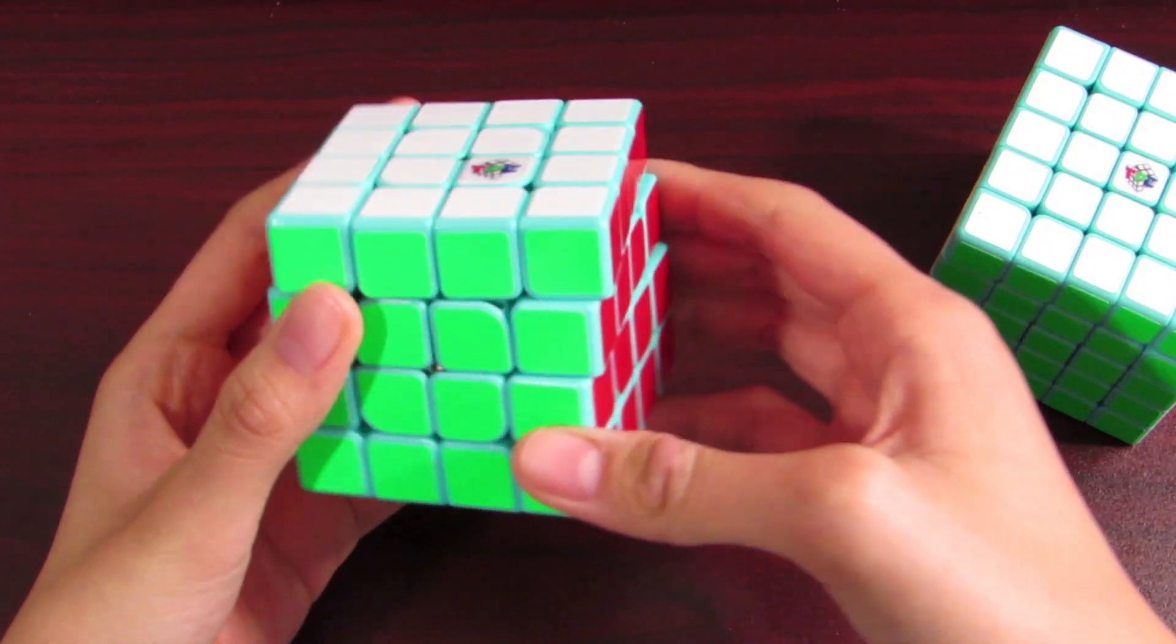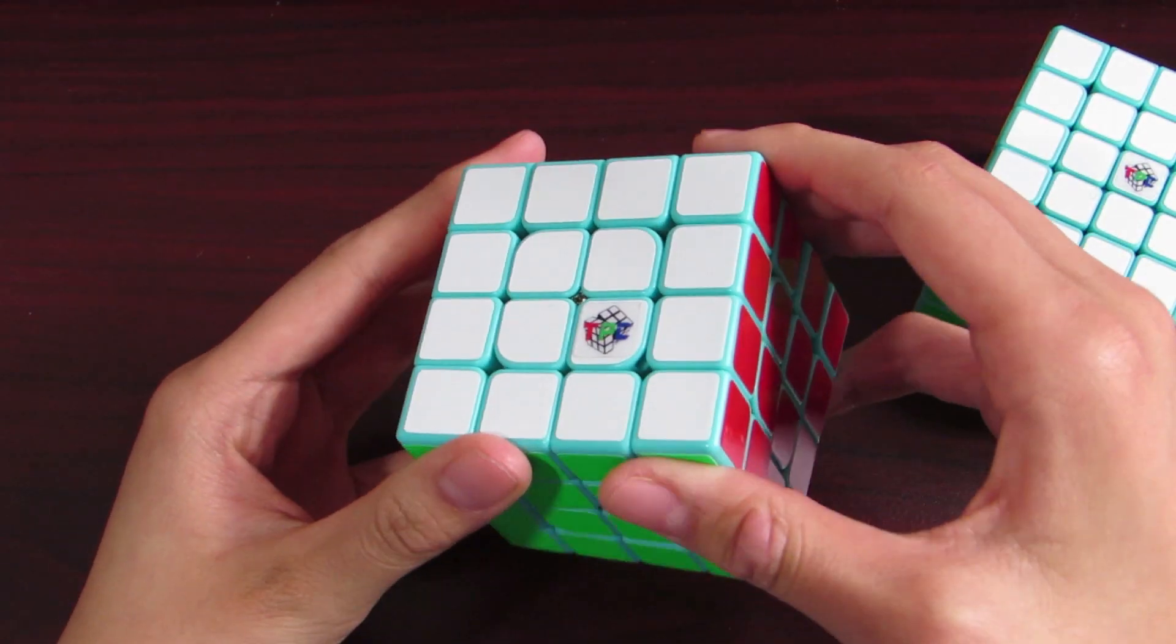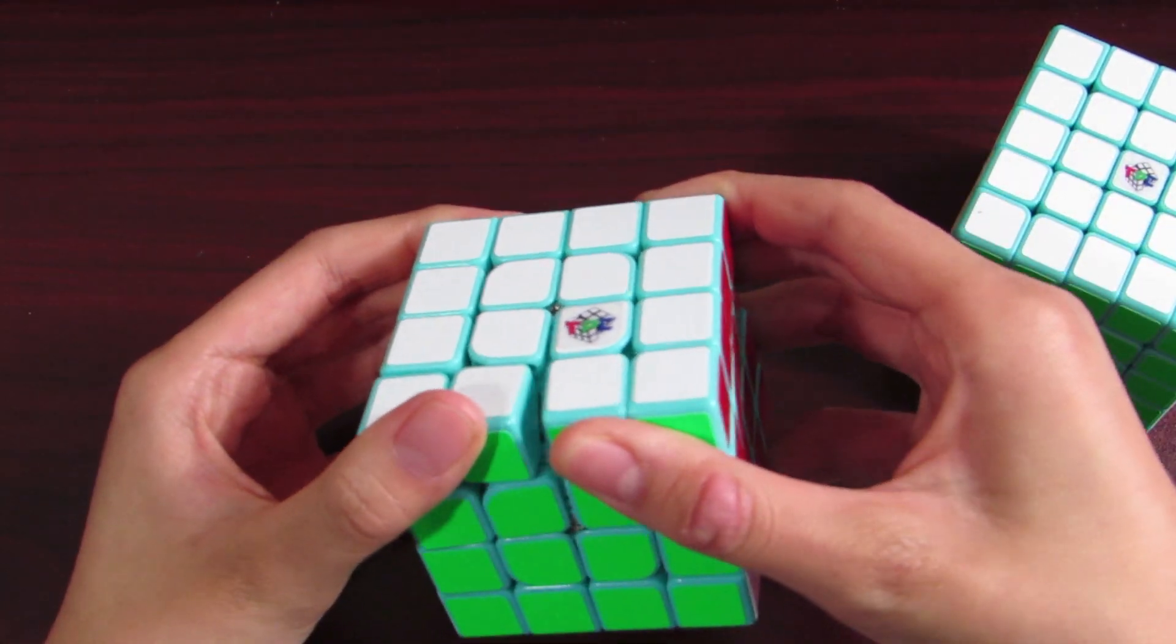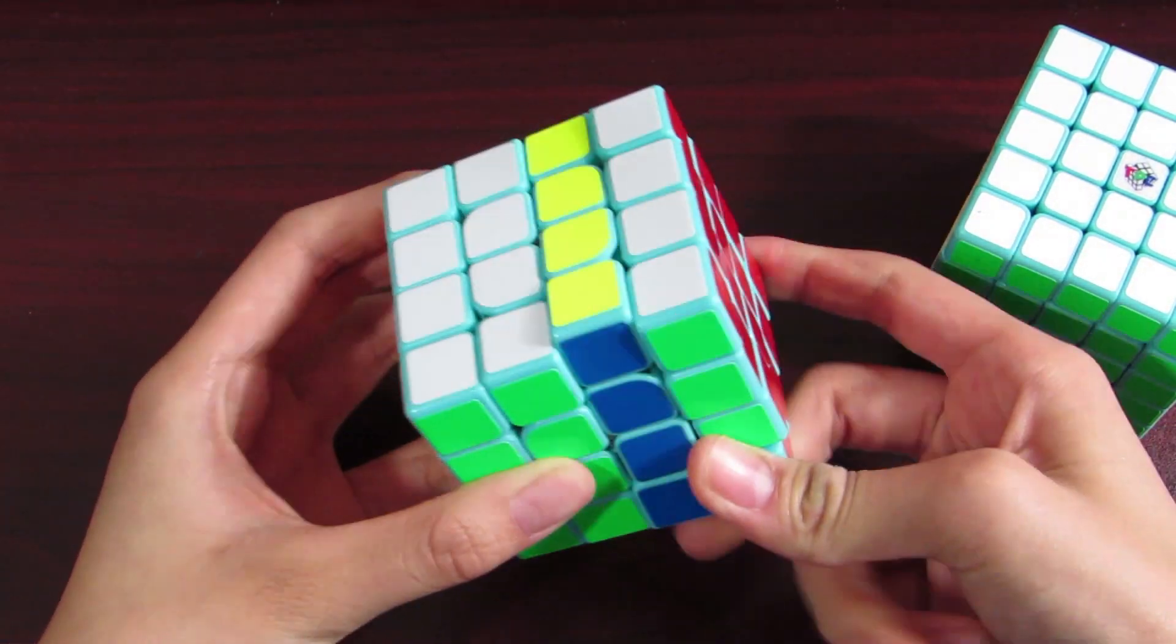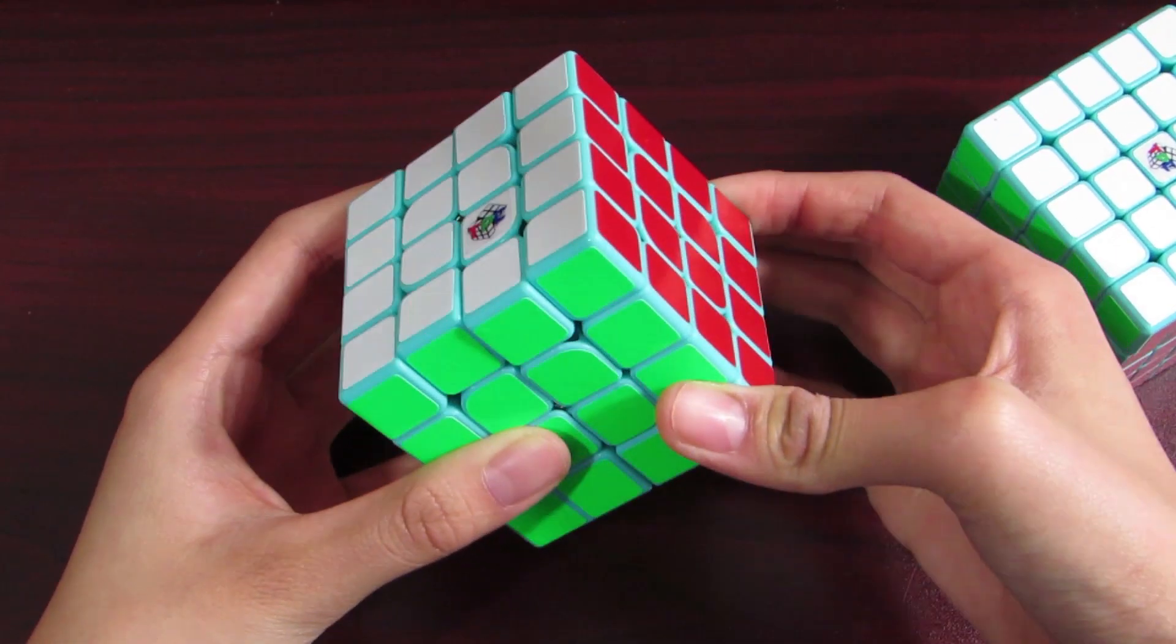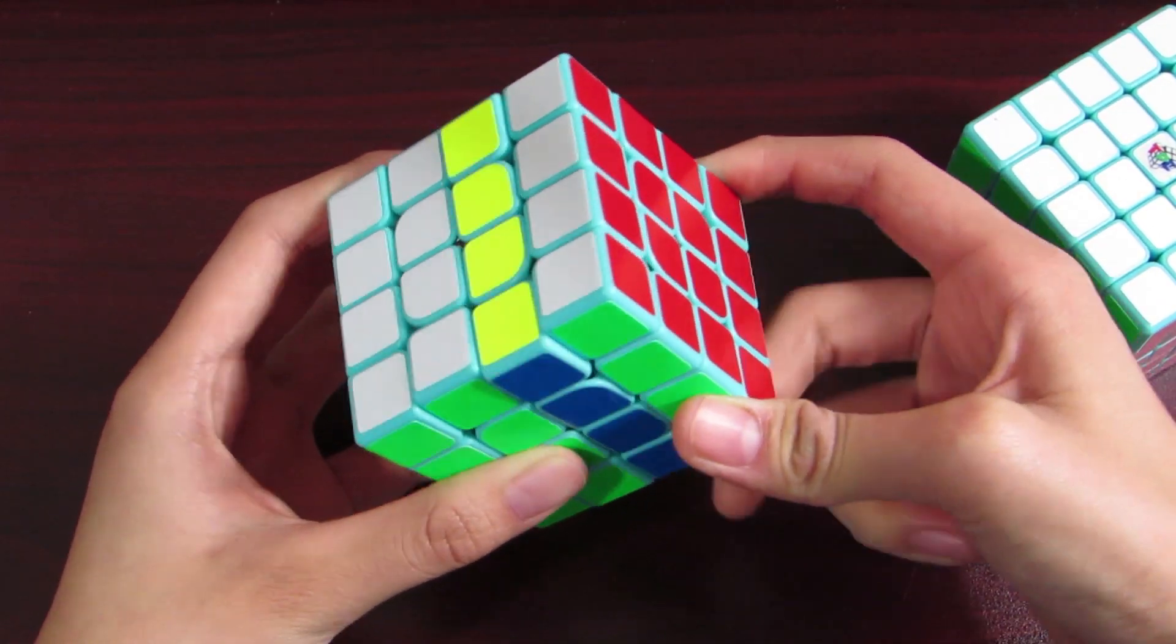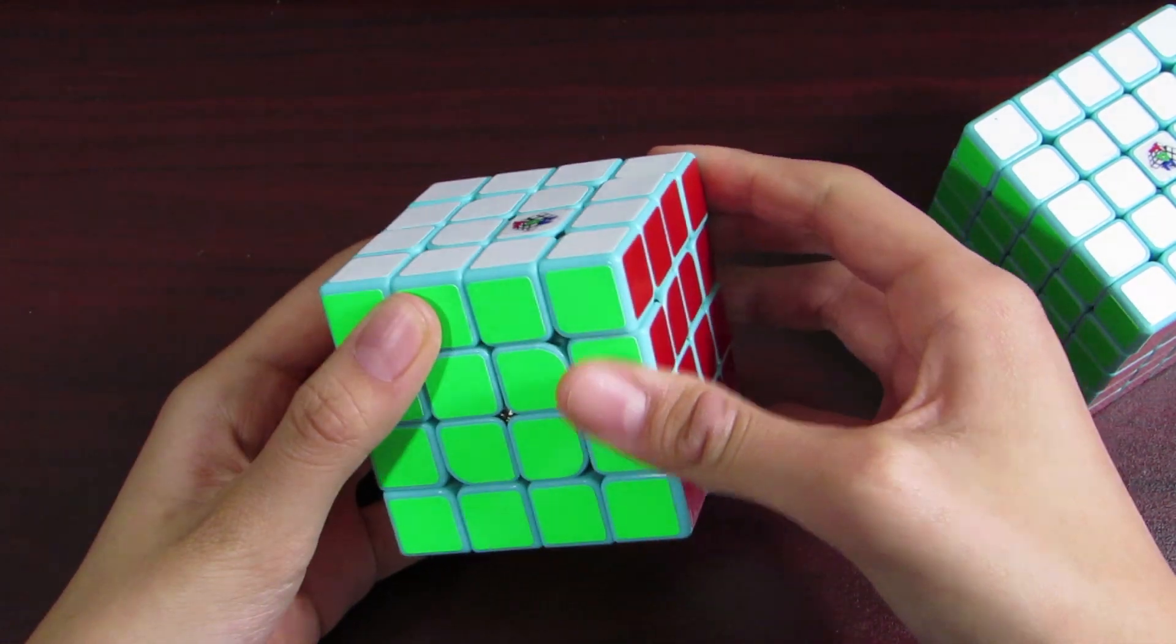I'm actually not entirely sure if I have a batch one or a batch two. If you guys didn't know they had a whole thing where the batch one was horrible and then the batch two fixed it or something. Because I'm not getting much of that inner layer locking. As you can see the inner layer seems to turn pretty freely without completely catching all the time like a lot of people were having with their batch ones.